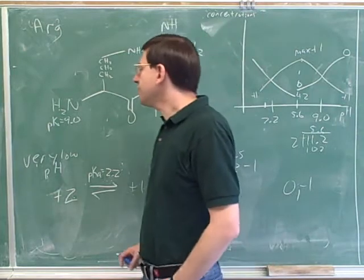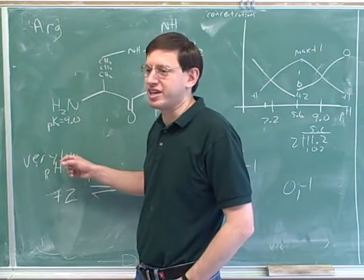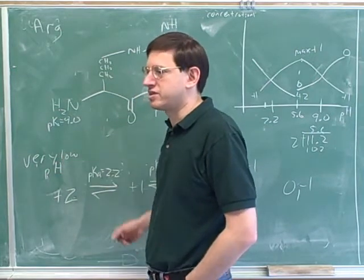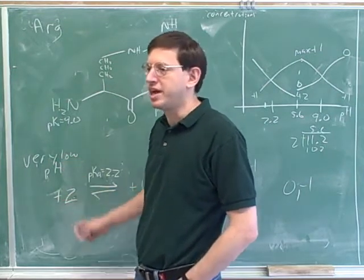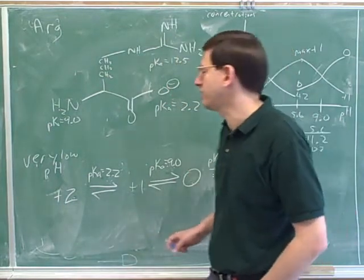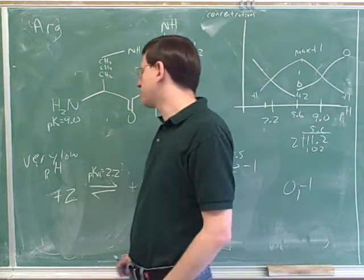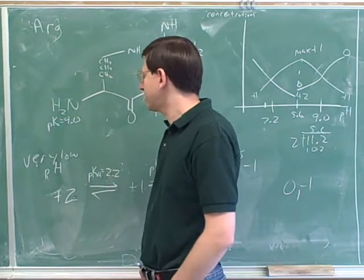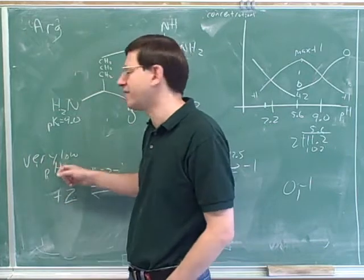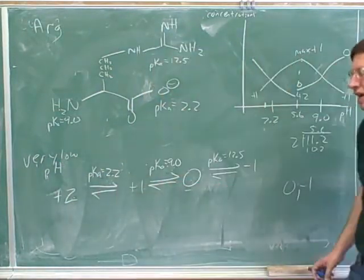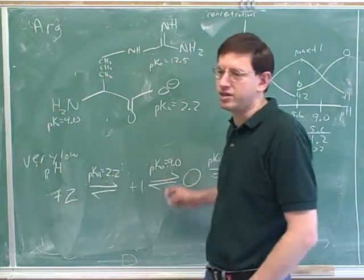Notice that even though we started by imagining a very low pH, that doesn't mean we really think we're at a very low pH — that was just a thought process. It's a useful thought process for figuring out the net charge when everyone is protonated. The question itself doesn't have to be about a very low pH. There are other types of problems where we wouldn't use this method. Students sometimes think they always have to imagine a very low pH, but no — it's just for this particular method, to get a series of net charges and pKas down on paper.